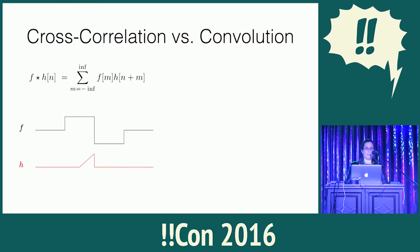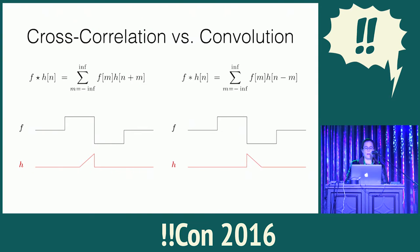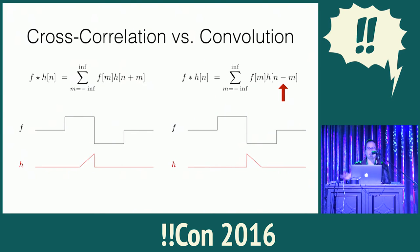Quick disambiguation. This is the equation for the operation we just did. You'll also hear about convolution. The only difference between correlation and convolution is that minus sign, which just means you need to mirror H before you slide it along G. That's it.